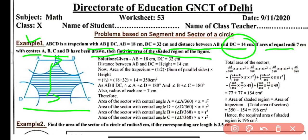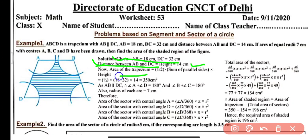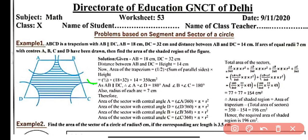We need to find the area of the shaded region. Four arcs have been drawn on each vertex of the trapezium with radius 7 cm. Area of trapezium = (1/2) × (sum of parallel sides) × height = (1/2) × (18 + 32) × 14 = 350 cm².